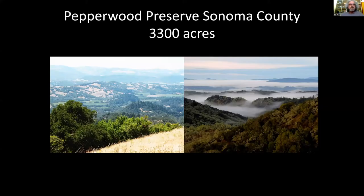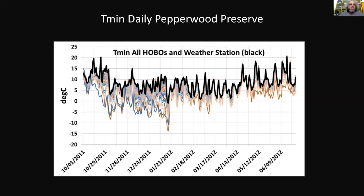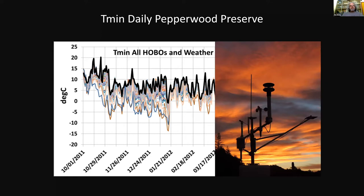I'm going to concentrate on the topoclimate. First, going to the Pepperwood Preserve in Sonoma County — about 3,300 acres. We laid out an array of small temperature sensors across the preserve on north slopes and south slopes, canyon bottoms and ridgetops and mid-slopes. When you look at the graph, you can see a lot of temperature variability of minimum daily temperature. The black line is the weather station at the top of the preserve — you might say that's the climate of Pepperwood, but at a finer scale we see a huge amount of variability.